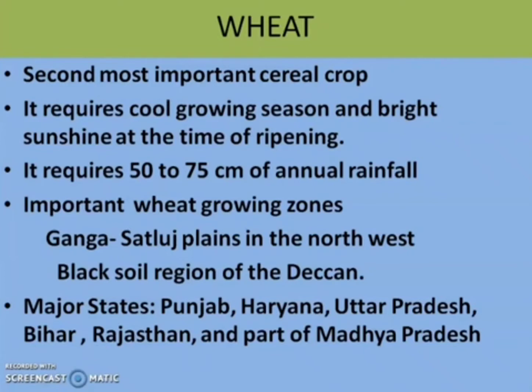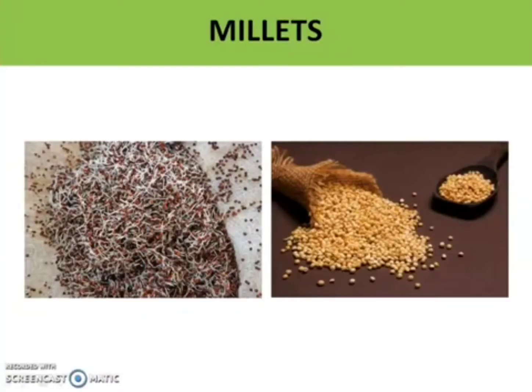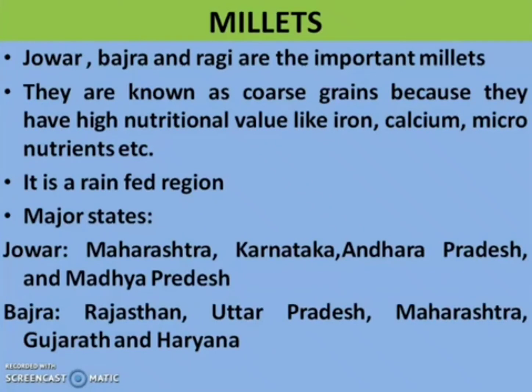The major wheat producing states are Punjab, Haryana, Uttar Pradesh, Bihar, Rajasthan and parts of Madhya Pradesh. The next crop is millets. Jowar, Bajra and Ragi are the important millets.